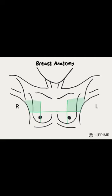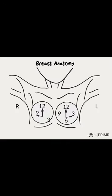Each breast is divided into four quadrants: upper outer, lower outer, lower inner, and upper inner quadrant. Ultrasound reports locate abnormalities based on where they would fall on the face of a clock.